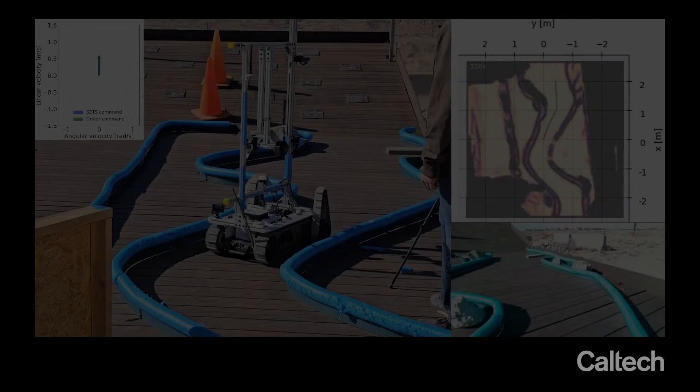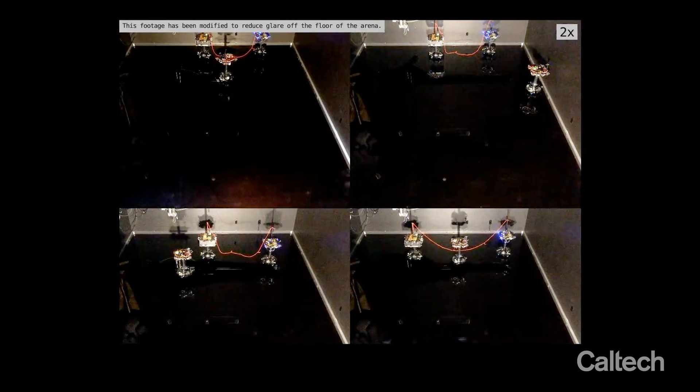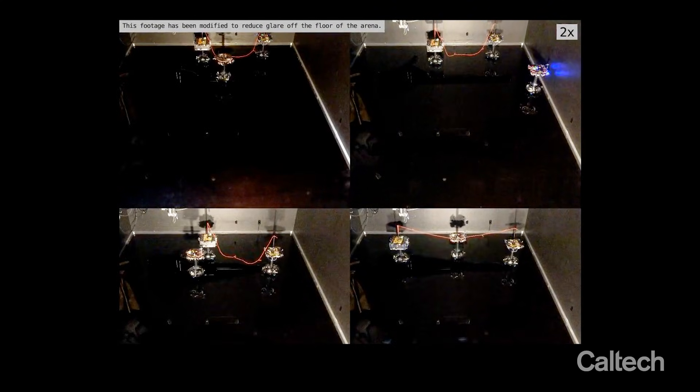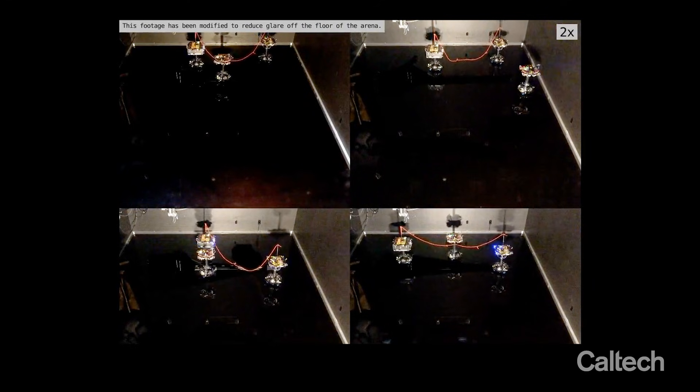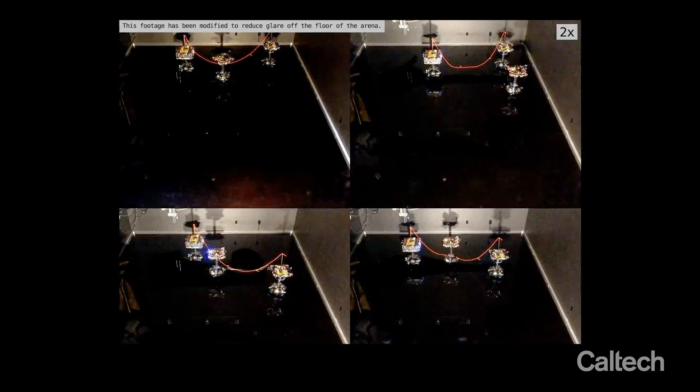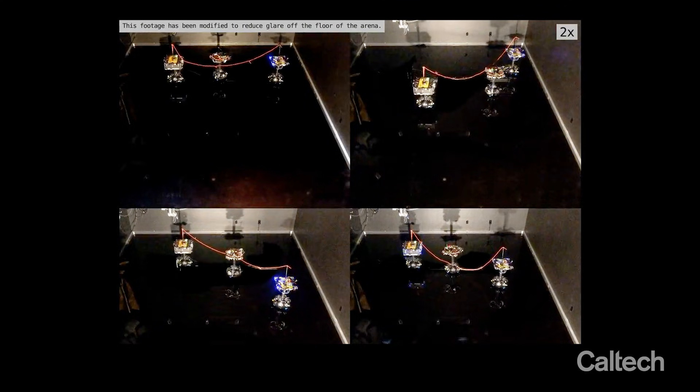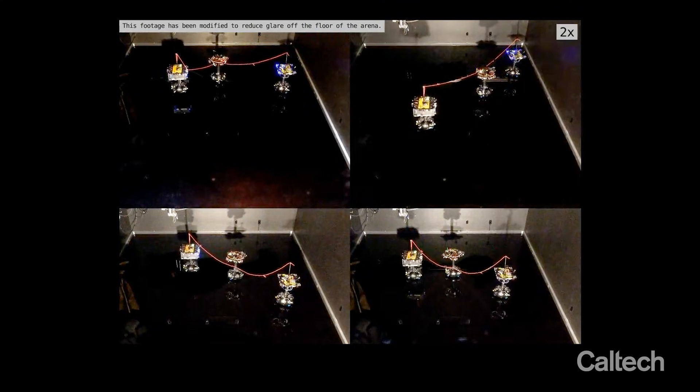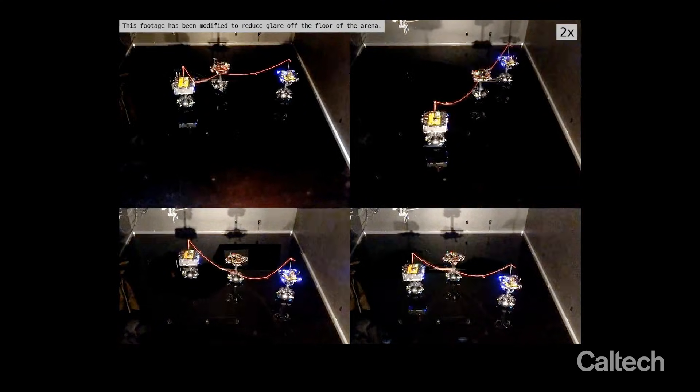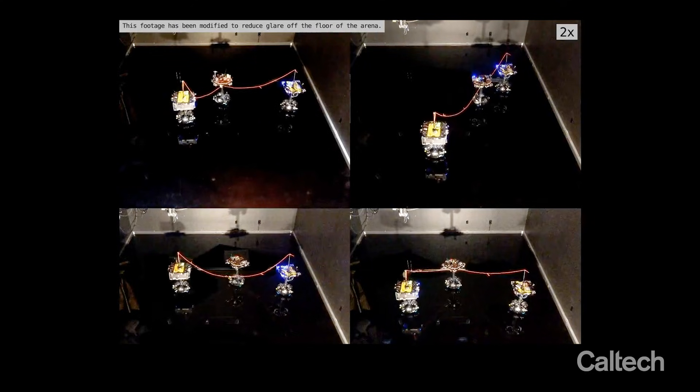In our third and final experiment, we deploy SETS on a team of two tethered spacecraft tasked to capture and redirect a third uncooperative agent. We test four scenarios where the uncontrolled craft is initialized moving in different directions. The goal of this experiment is to redirect the target to exit to the bottom of the arena.